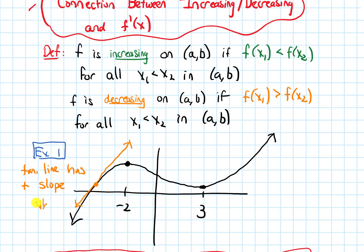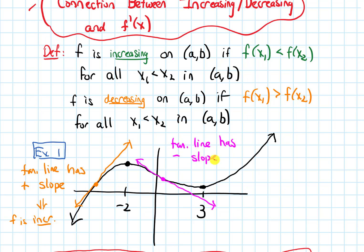The key is that when the tangent line has a positive slope, our function is increasing. On the flip side, if I look at a portion of the graph where it is decreasing and I draw the tangent line there, that tangent line has a negative slope. And when the tangent line has a negative slope, our function is decreasing.